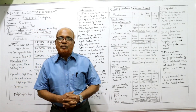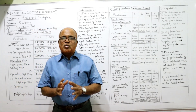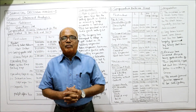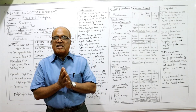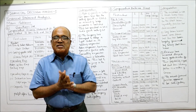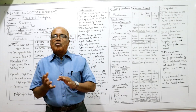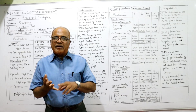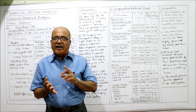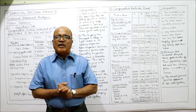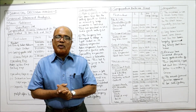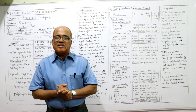This is the end of the 11th problem. In total, 11 problems have been completed on financial statement analysis, which consists of common size statement, comparative, and trend analysis. We will continue with the next problem in the next video.